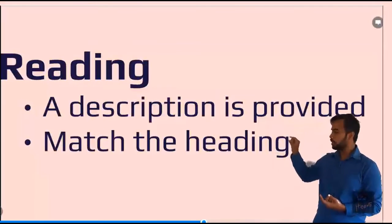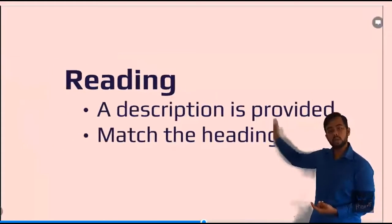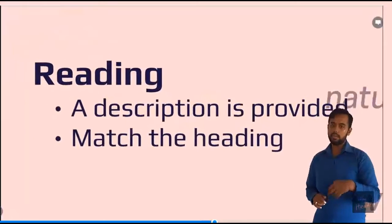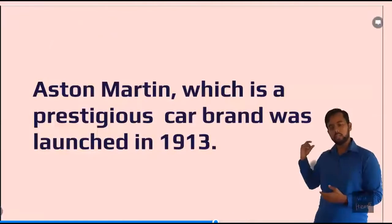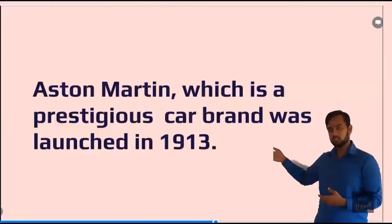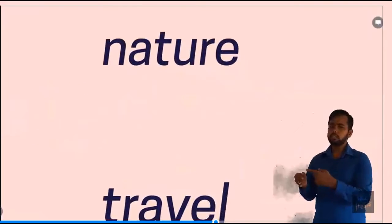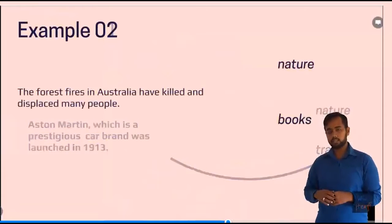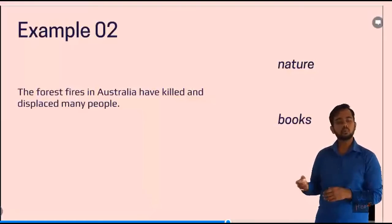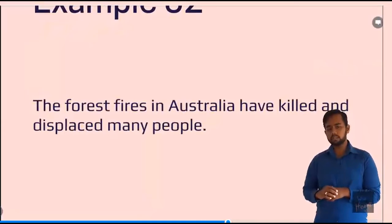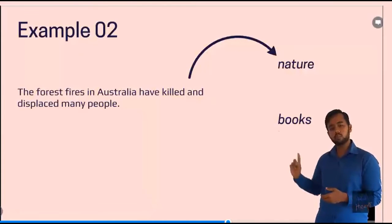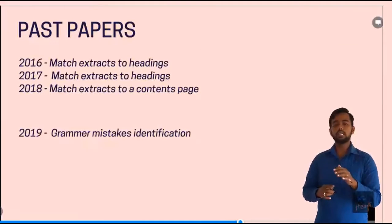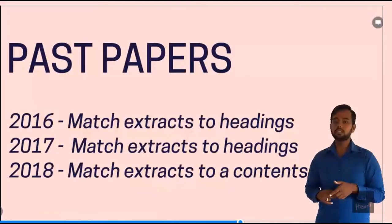There will be several descriptions given to you — around five — and you have to match the appropriate heading. For example, if there are two headings, nature and travel, and the description is 'Aston Martin is a wonderful car that was launched in some year,' is this nature or travel? It has to do with travel. Or if the heading is nature and the description is 'forest fires in Australia have killed and displaced many people,' then it should match nature. In this way we have to match — that was the structure in 2016, 2017, and 2018.